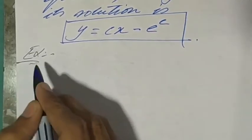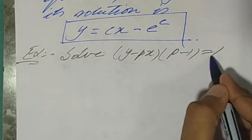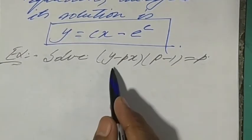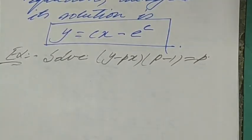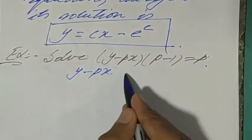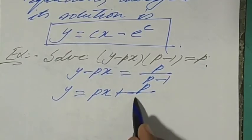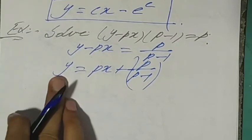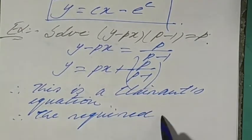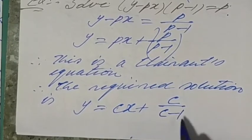Last example: solve (y - px)(p - 1) = p. Transposing: y - px = p/(p - 1), so y = px + p/(p - 1). This is in the form y = px + f(p), so it is a Clairaut's equation. The required solution is y = cx + c/(c - 1).